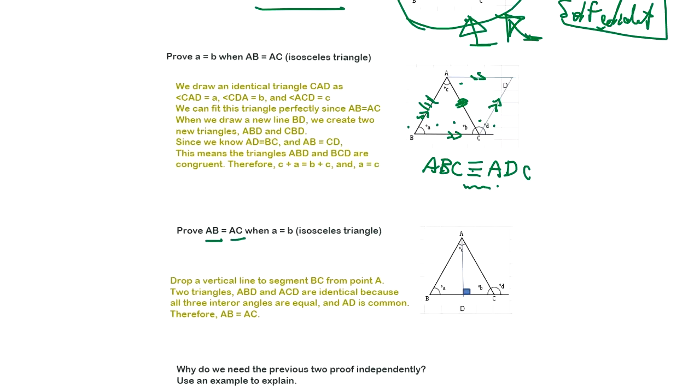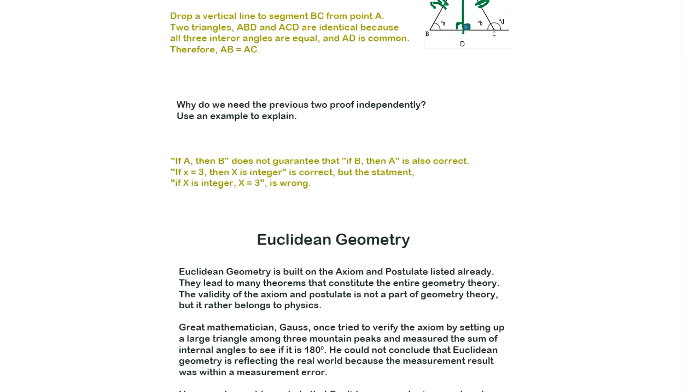And we draw, we show this way, congruent triangle. So we just prove that these lengths are equal. Prove AB and AC. AB and AC when A equals B. So we just did it this way. We can do different way. We take a perpendicular line. Then this is 90. This guy is 90. Then we have a congruent triangle again. So that means this and this lengths are the same.